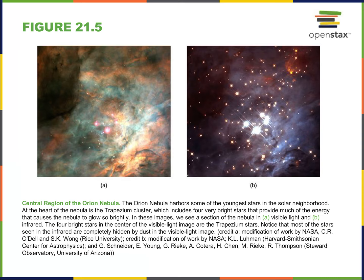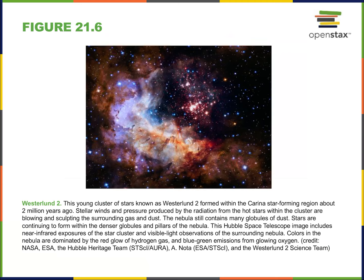Here we have a region harboring young stars. Notice the two images: in image A, we're looking at a few visible stars; in image B, we're looking in the infrared. Where do you see more stars? In the infrared, of course — because these are stars that would otherwise be obscured by the molecular clouds that allowed them to be created in the first place.